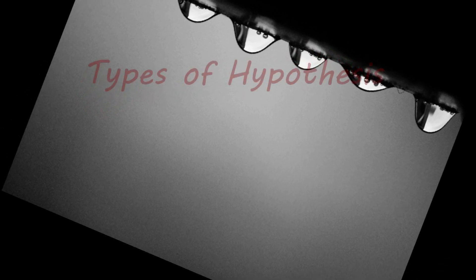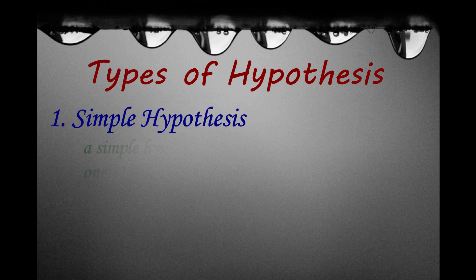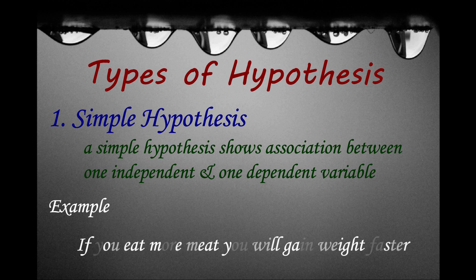Now what are the different types of hypothesis? Number 1. Simple hypothesis. A simple hypothesis shows the association between one independent and one dependent variable. For example, if you eat more meat, you will gain weight faster. Here, meat is an independent variable while weight is the dependent variable.